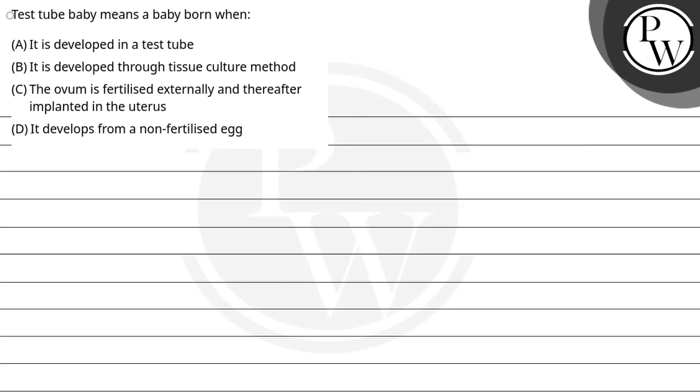Hello, let's see this question. The question says test tube baby means a baby born when options are: it is developed in a test tube, it is developed through tissue culture method, the ovum is fertilized externally and thereafter implanted in the uterus, and it develops from a non-fertilized egg. So the key concept here is in vitro fertilization.